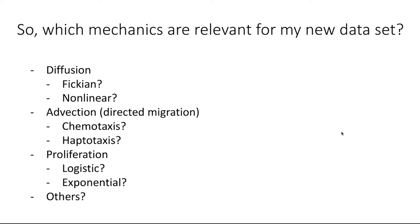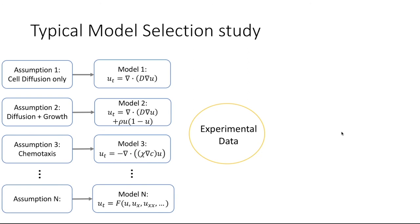Furthermore, maybe cells aren't simply spreading into empty space — maybe they have some directed form of migration due to chemicals. Mathematically we would call this advection, where cells have some predefined orientation to migrate towards. This could include chemotaxis, where cells move towards chemical gradients, or haptotaxis, where cells anchor to things on the ground and move towards increasing gradients of those anchors. And this is completely ignoring how cell populations may be growing over time — there are many different models for that, such as logistic or exponential growth.